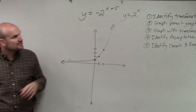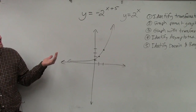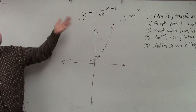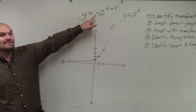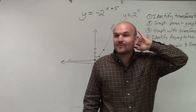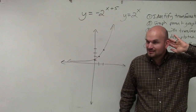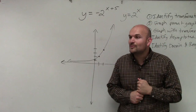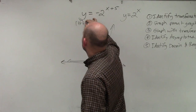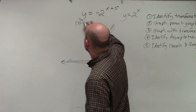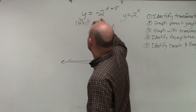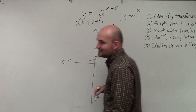Now, the next thing — actually, the first step was to identify the transformations. So once we graph the parent graph, let's look at what transformations we have. We have this negative. Does anybody remember what the negative is going to do? It's going to reflect over the x-axis.